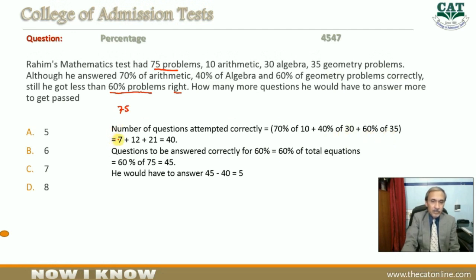Now 70% of 10 is 7, 40% of 30 is 12, and 60% of 35 is 21.